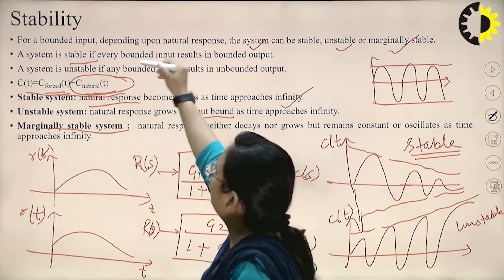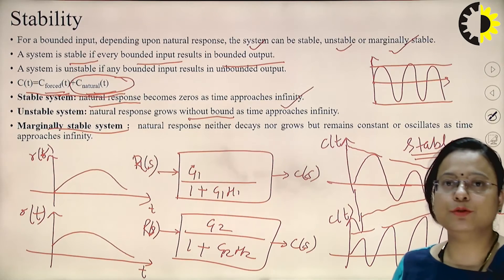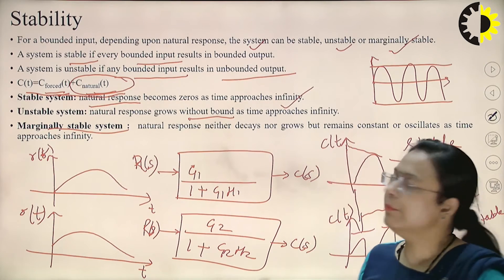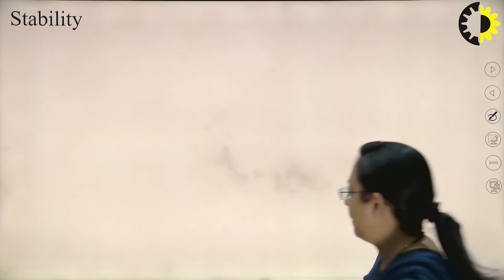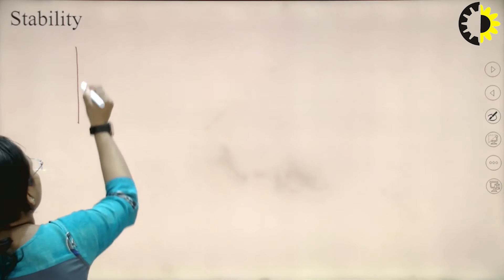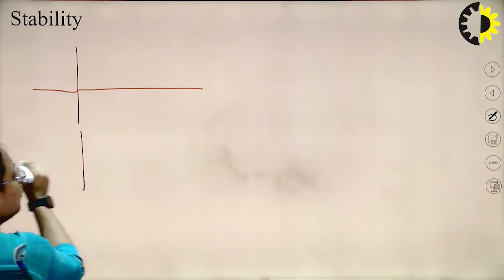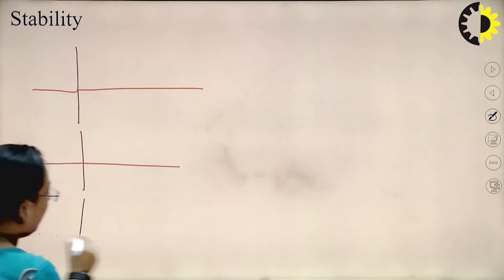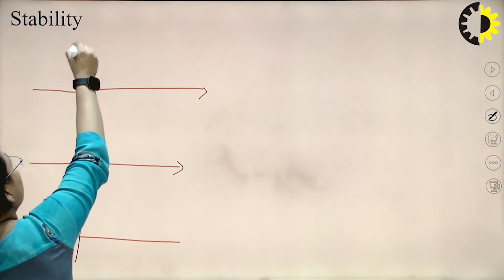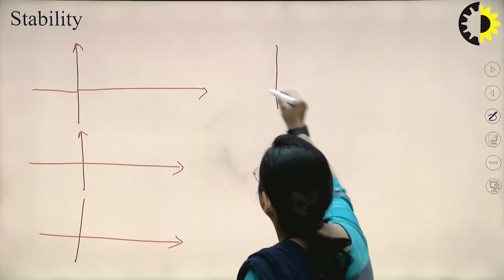A system is stable if every bounded input results in a bounded output, and a system is said to be unstable if any bounded input results in an unbounded output. Now let me clarify this further with respect to the S-domain. I am drawing the roots of the characteristic equation in the S-plane, along with graphs.